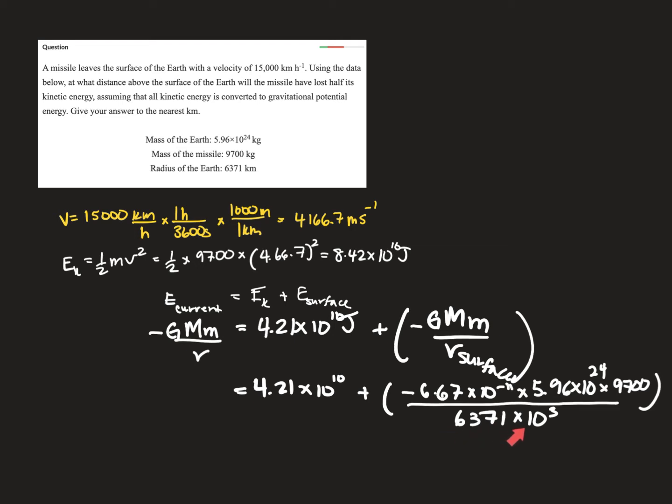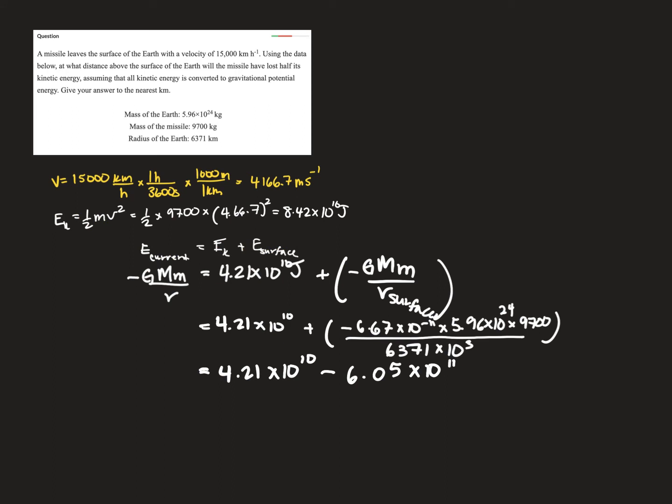Now, notice that I have this times 10 to the 3 because in order for all of this to work, I need to have meters. But the question actually gave me kilometers. Plugging into my calculator, that gives me 6.05 times 10 to the minus 11. Remember, I'm keeping all the extra decimal places in my calculator for now.